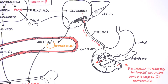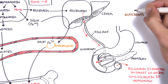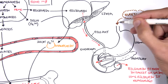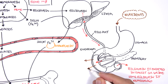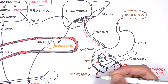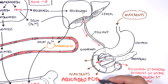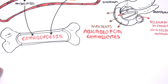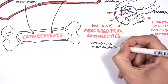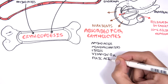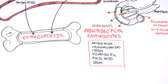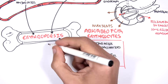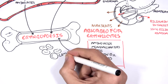Now that we're looking at the stomach and small intestine, it's important to note that when we eat nutrients, some of these are important in red blood cell production. They are absorbed in the small intestine. Nutrients absorbed for erythropoiesis include amino acids, monosaccharides, lipids, vitamin B12, folic acid, and iron. All of these are used in erythropoiesis because we need them to make red blood cells.